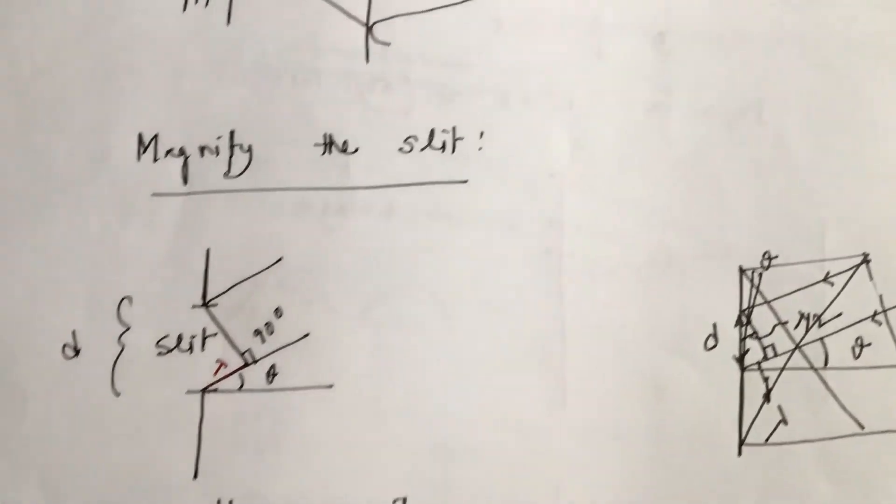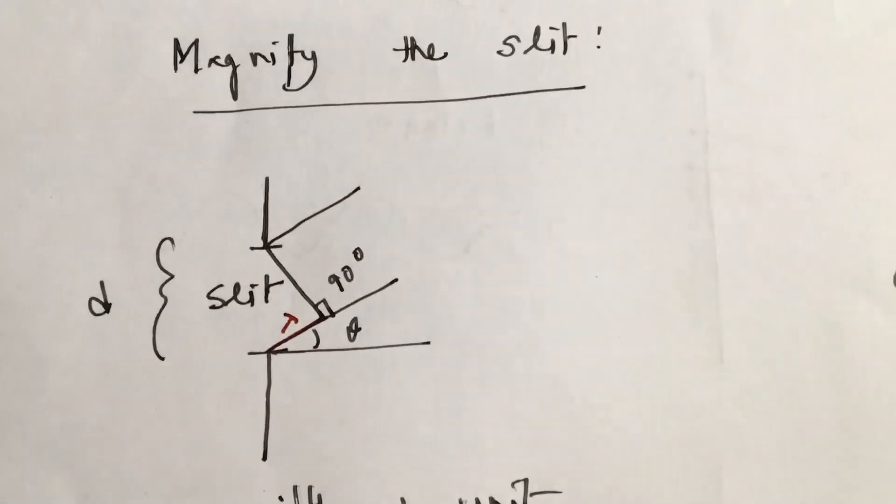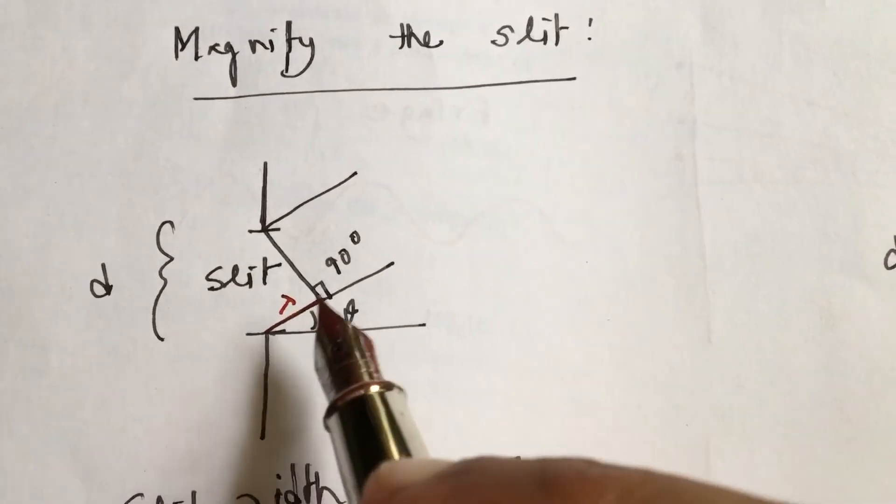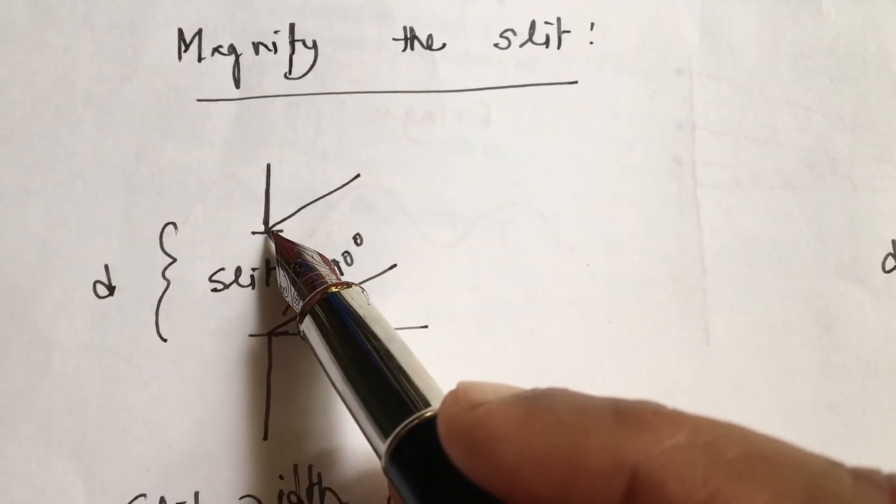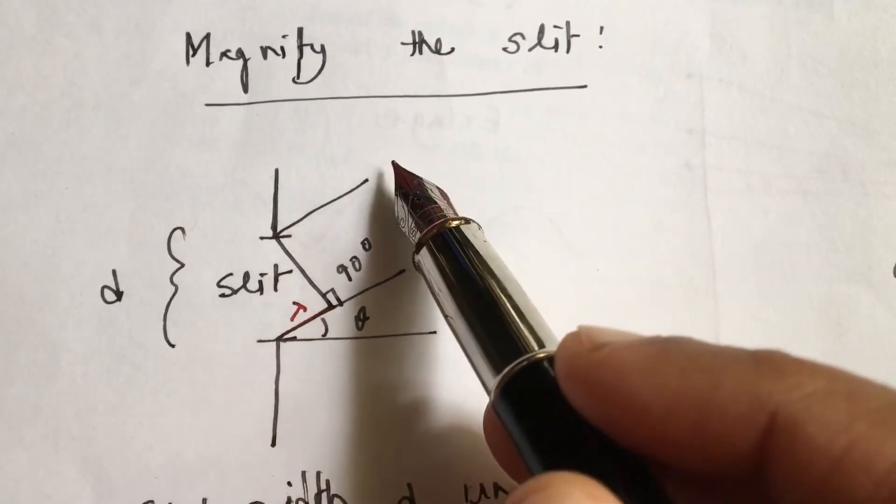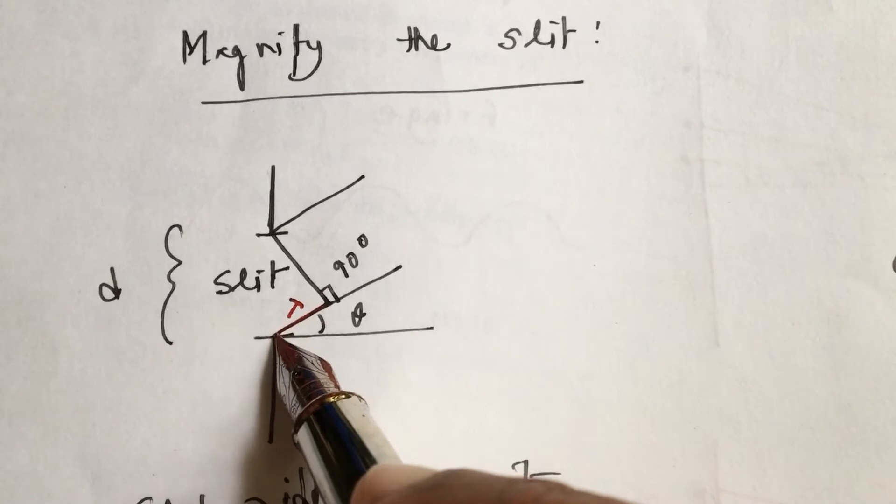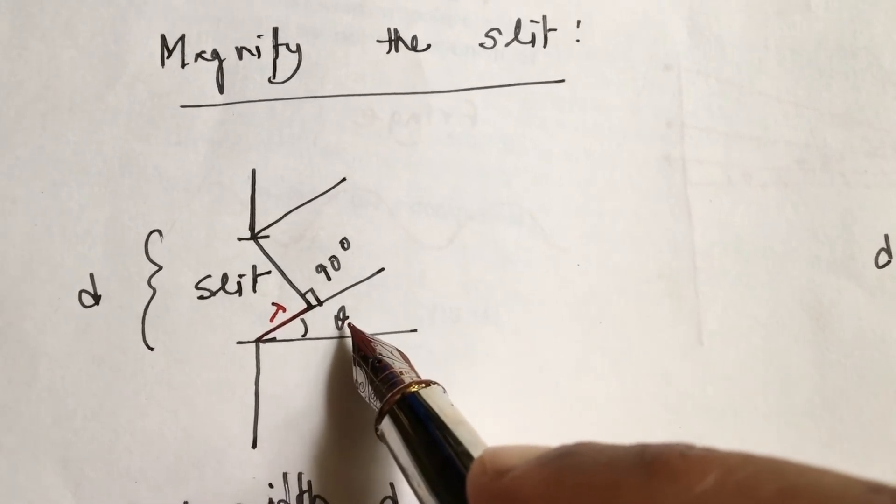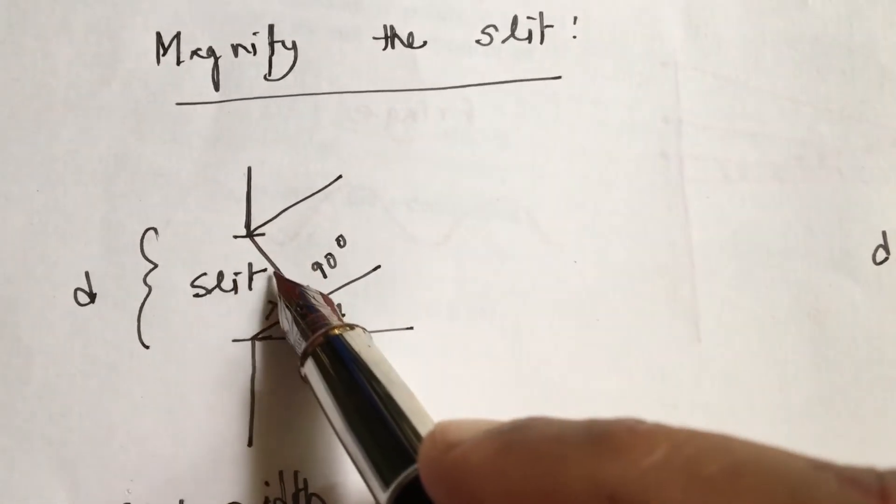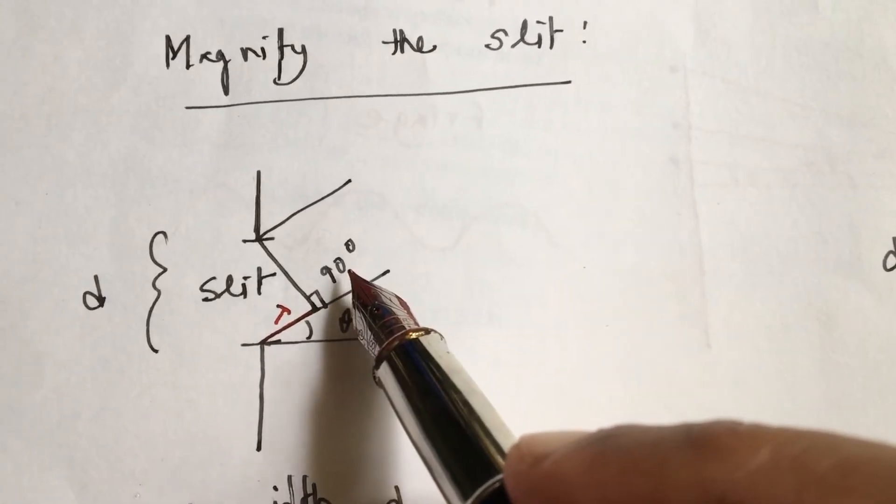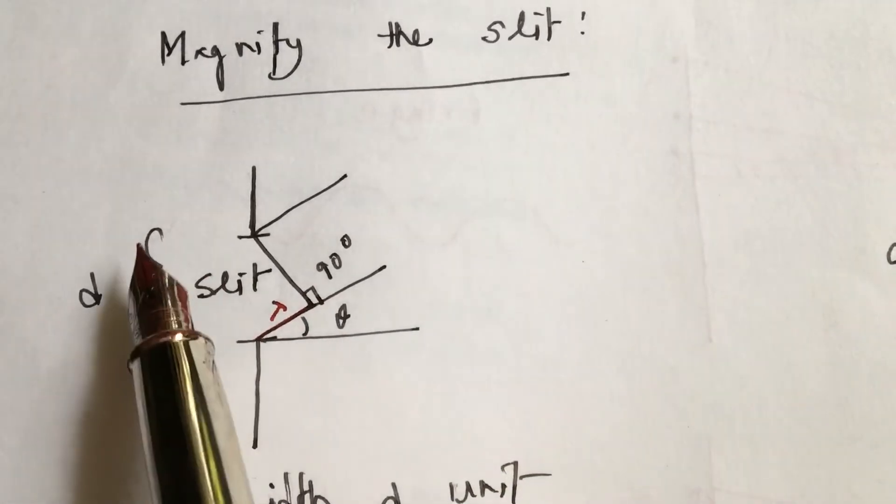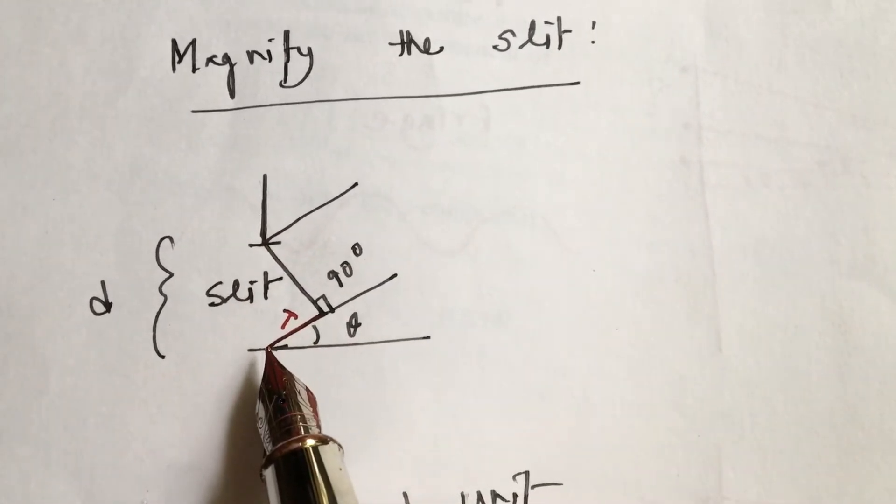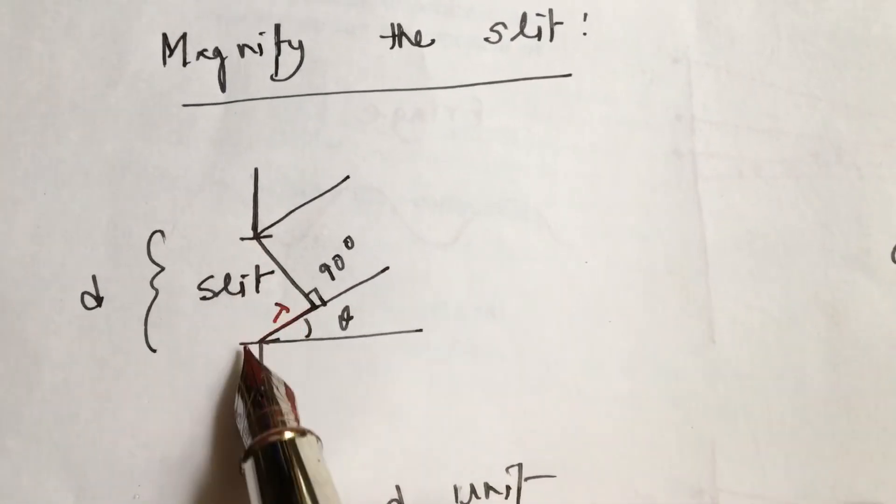Let us magnify the slit. We have magnified the slit with a magnifying glass. One wavelength of light is getting out from here, another wave is getting out from here. If this length is lambda, that is one wavelength, this is the angular spread of the wave which is theta.